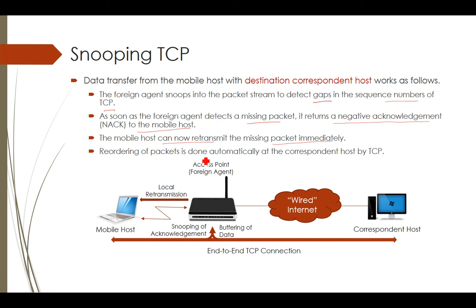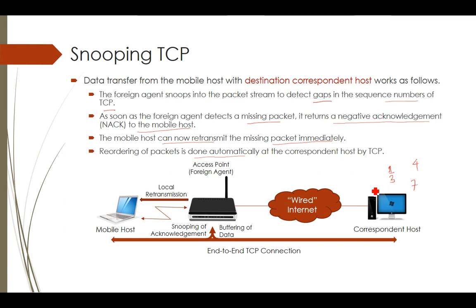Reordering of packets is done automatically at the correspondent host by TCP. When data is received by the correspondent host out of order — for example, first, third, seventh, then fourth sequence numbers — the arrangement is handled by the correspondent host. This is how Snooping TCP works.